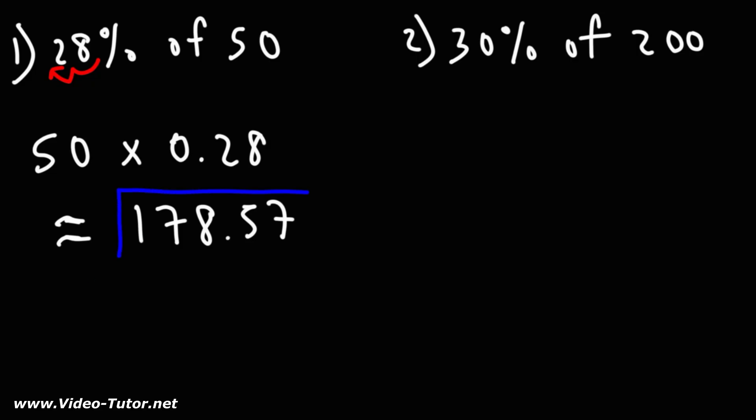So that's a quick and simple way to find a percent of a number. You simply need to multiply the number by the percentage as a decimal.